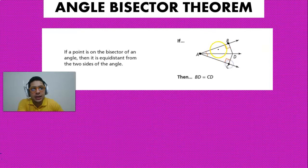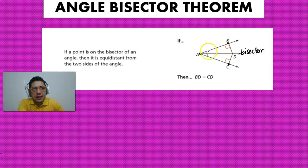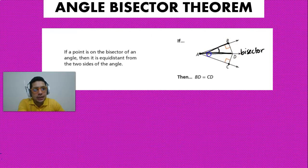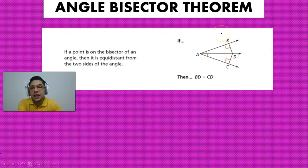and we know that AD is the bisector, we know two things. First, that angle BAD and angle DAC are going to be congruent because AD is indeed the bisector. And we also know, because of the angle bisector theorem, that if a point is on the bisector — so point D —